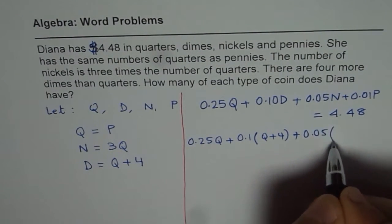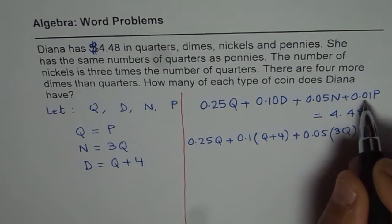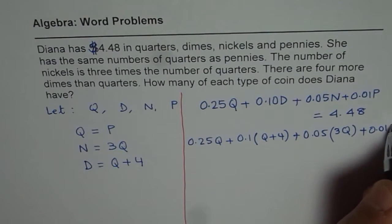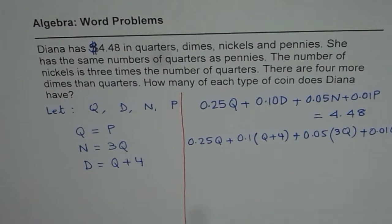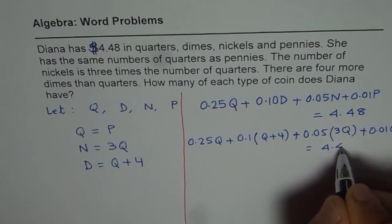Plus 0.05 nickels, and nickel is 3 quarters, 3Q. Plus pennies. Pennies are equal to quarters. So we can write 0.01 quarter. Number of pennies is same as number of quarters. And all this is equal to 4.48.